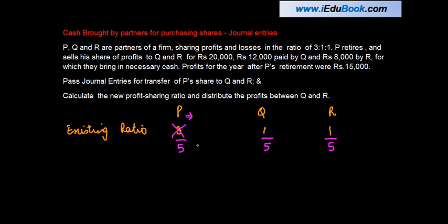When P retired, he sold off his share of profit to Q and R. The total money he received was twenty thousand, out of which twelve thousand was paid by Q and eight thousand by R, for which they bring in the necessary cash. Profits for the year after P's retirement were rupees fifteen thousand. Pass journal entries for the transfer of P's share to Q and R, calculate the new profit sharing ratio, and distribute the profits between Q and R.